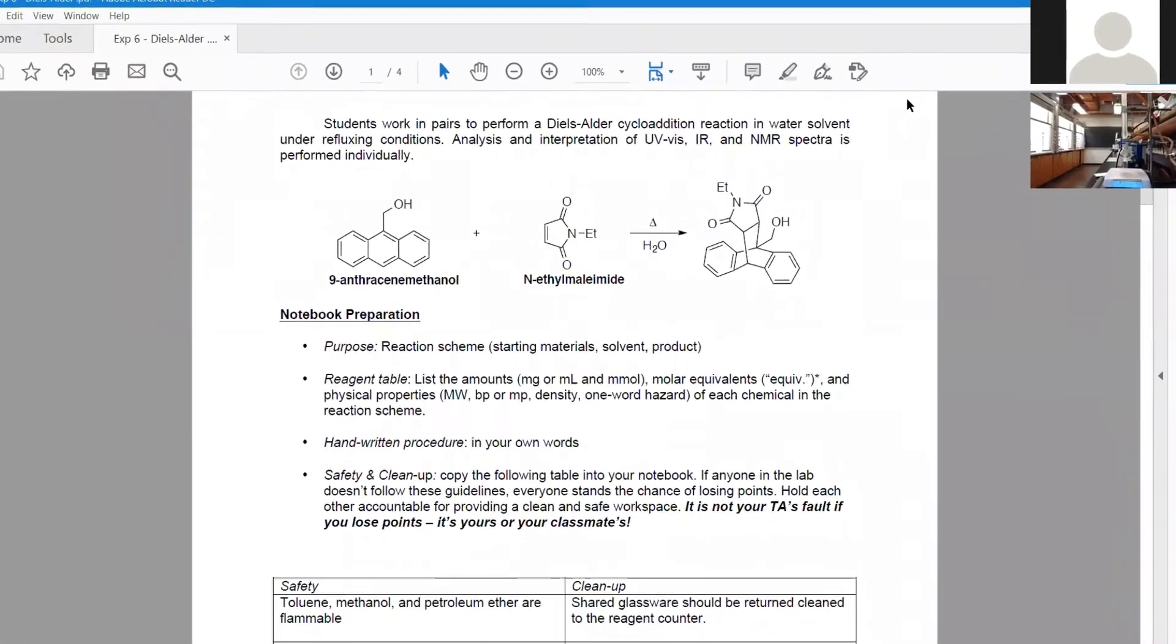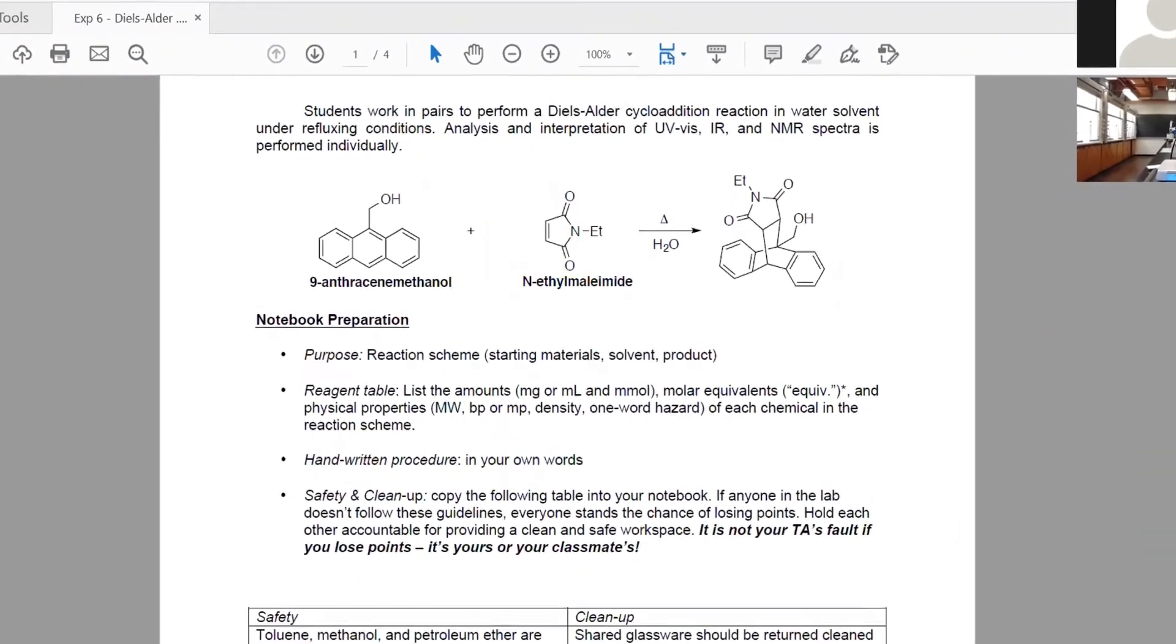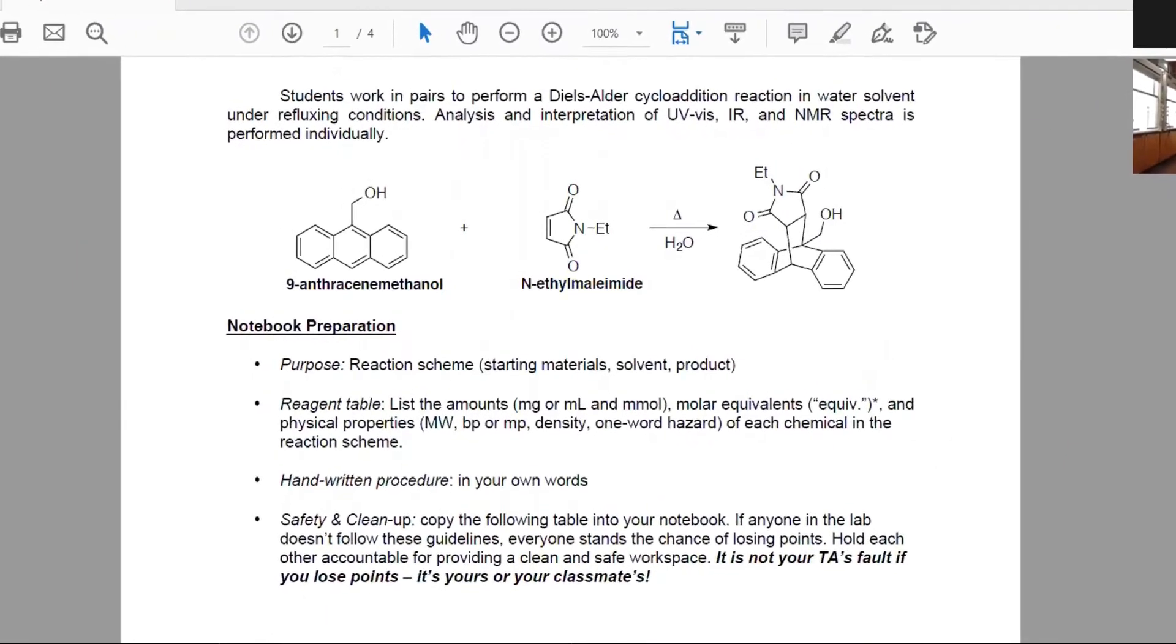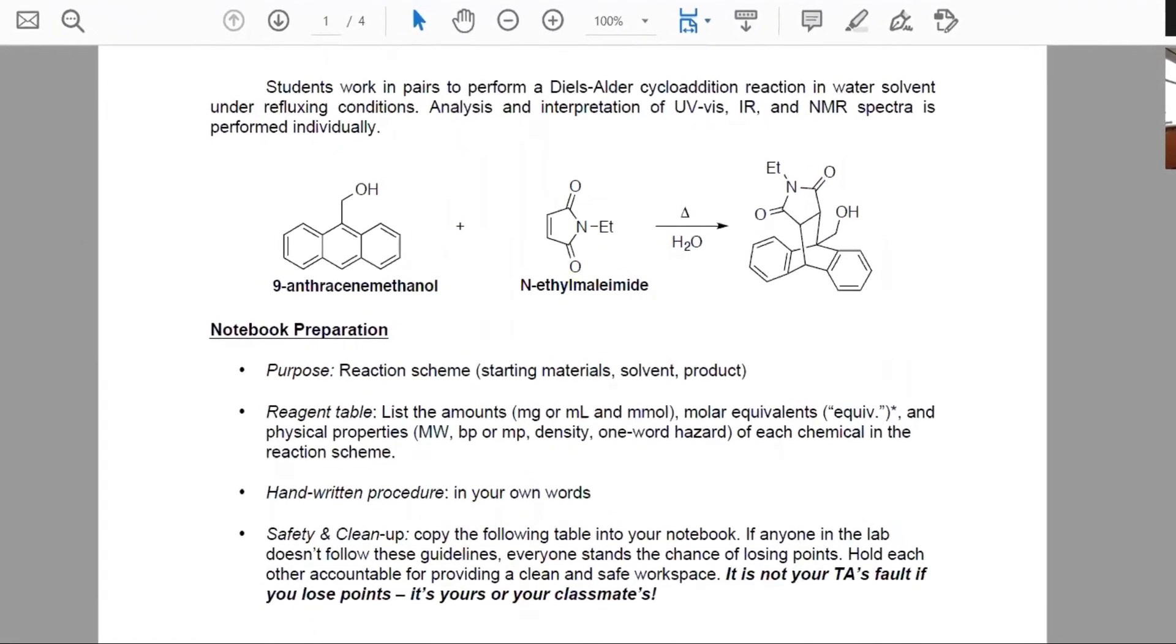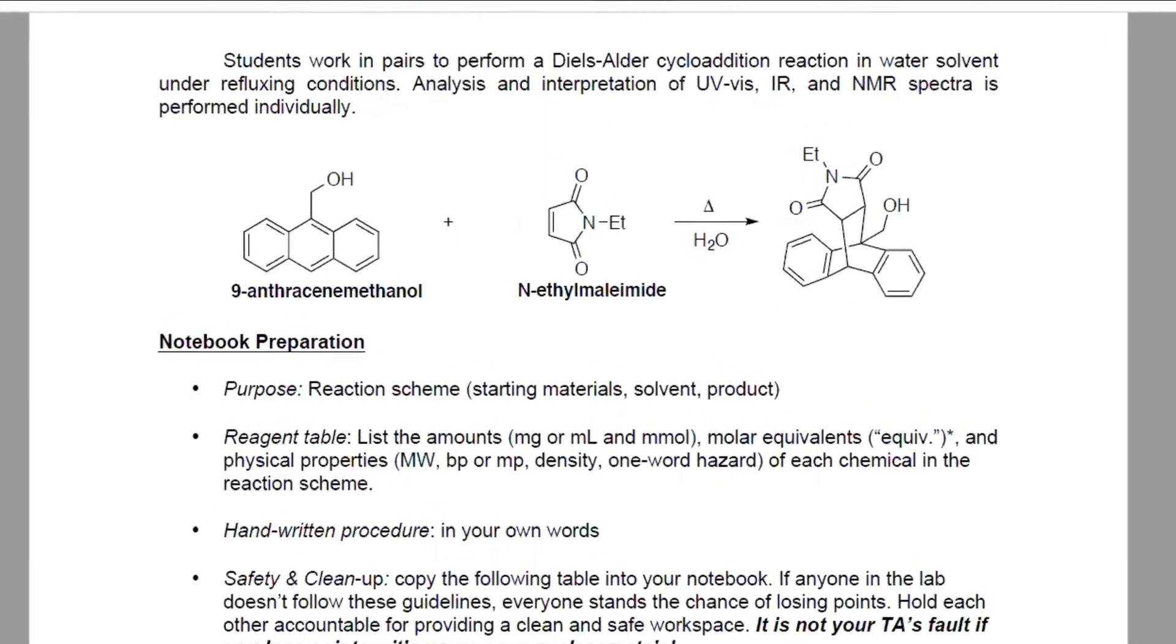Okay, so this is experiment six, the Diels-Alder reaction, and right here we're just looking at Daniel's setup of 9-anthracene methanol with NEM in water. And we're going to go ahead and start this reflux.